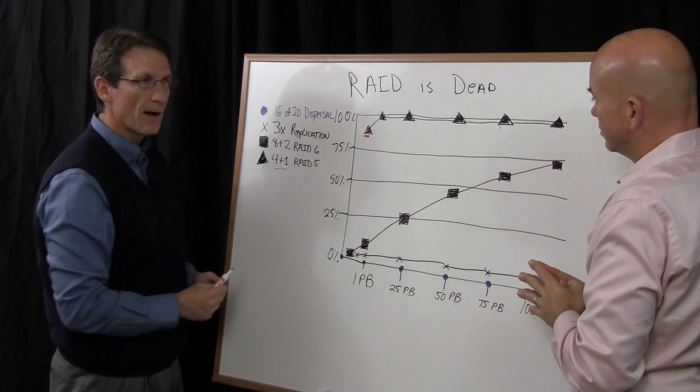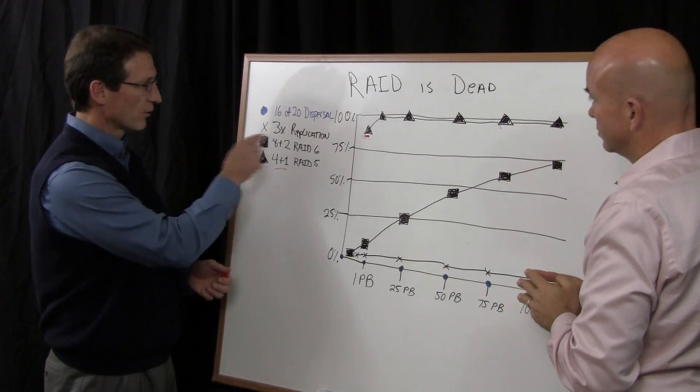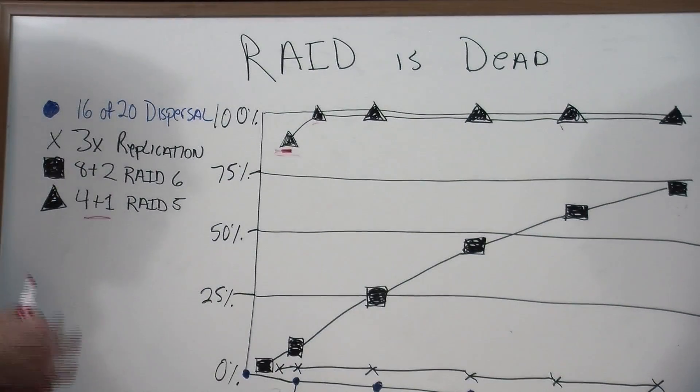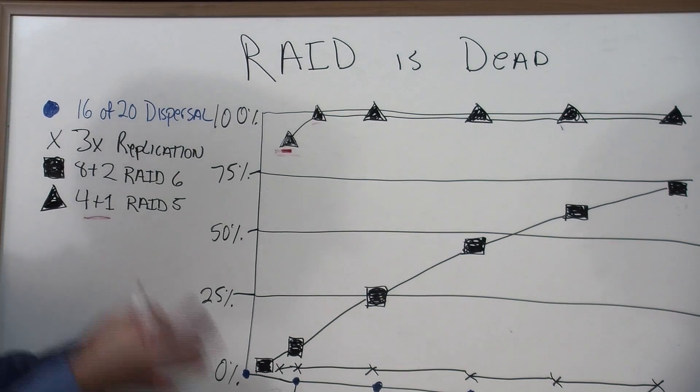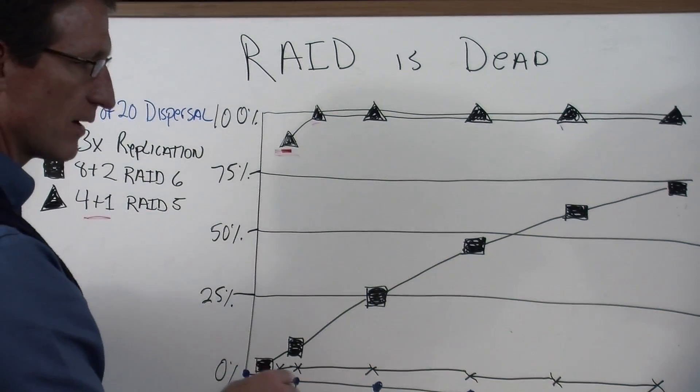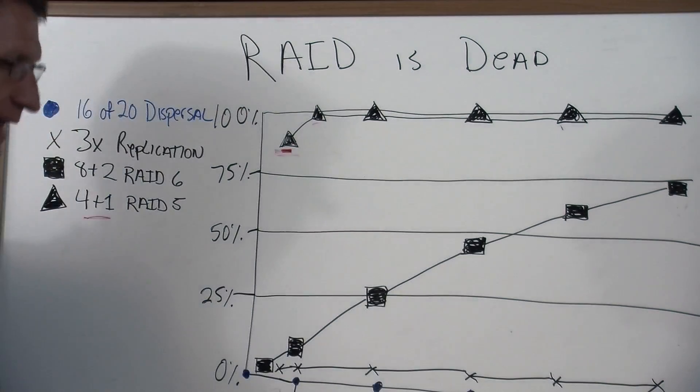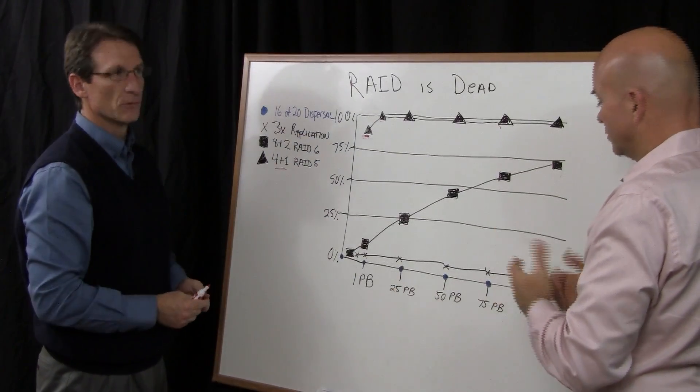So what people do to compensate for that is they make copies. They make copies of their data. The third example that we have here is 3X replication. So that's three copies of your data on three different storage systems. Whether or not it's RAID 5 or RAID 6, it's three copies of the data. And even there, you start at a very low rate, but even there, your failure rate, chances of losing data as you get larger, as you get to 100 petabytes, go up to about 10%.